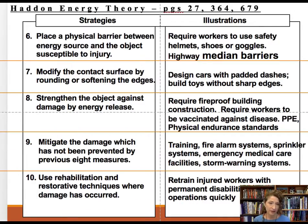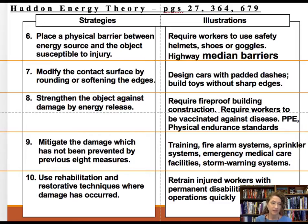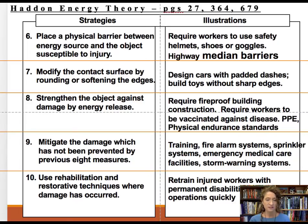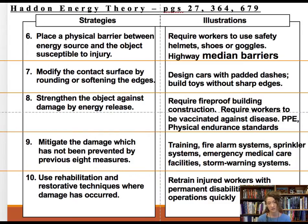Rule six is to put a physical barrier up. In lockout-tagout, a barrier is placed so only the people performing the operation can enter the zone. That covers all pre-event strategies. The event strategy — rule seven — is to modify the contact surface by rounding edges; an example is padding goalposts. Rule eight is strengthening the object against the release; workers wearing personal protective equipment strengthens the person against energy release, as does physical endurance training.